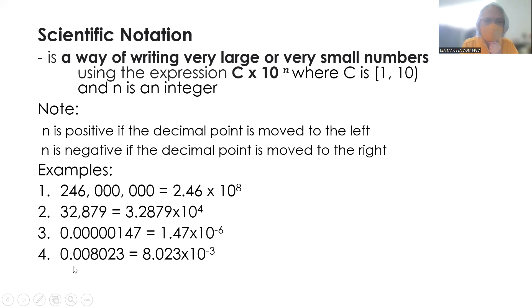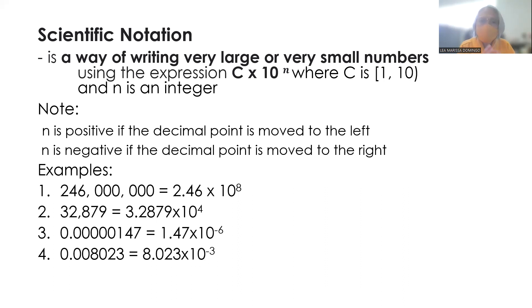And then we have this. So again, choosing our c to be 8.023. So we move the decimal point to the right 3 times, giving us 8.023 times 10 to the negative 3. So again, pagka meron tayong very large or very small numbers, pwede natin i-express using c times 10 to the n, which is scientific notation.